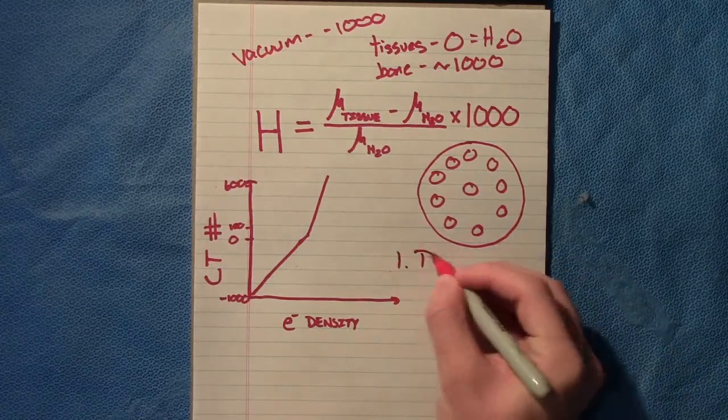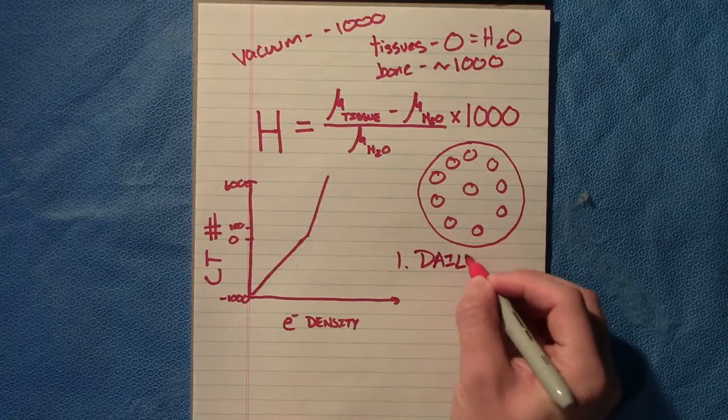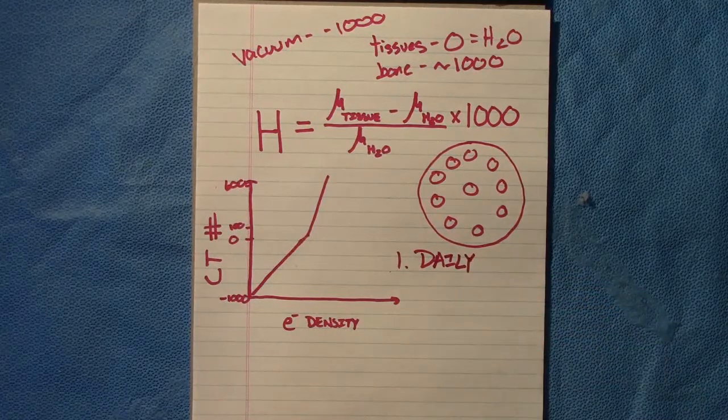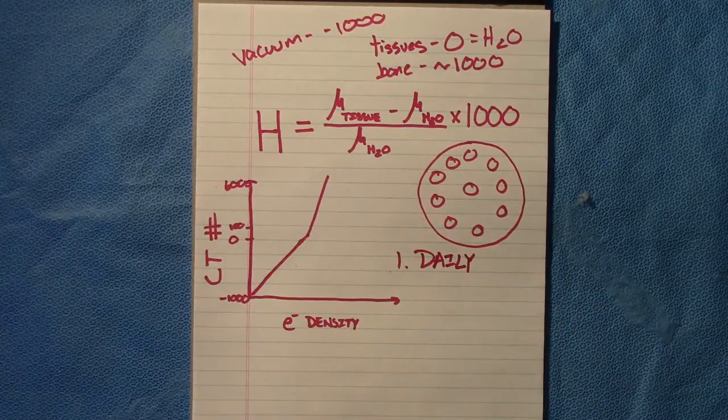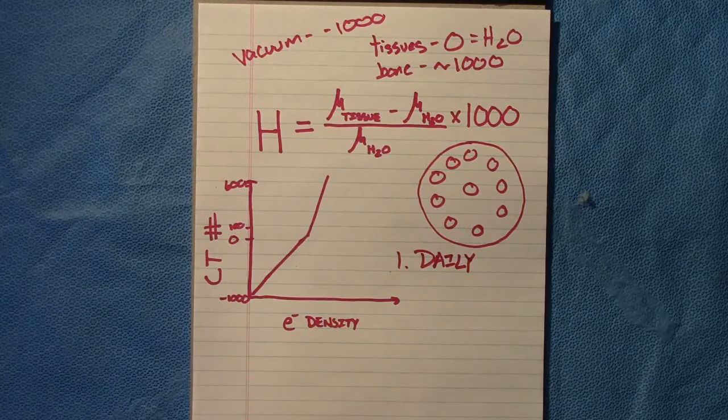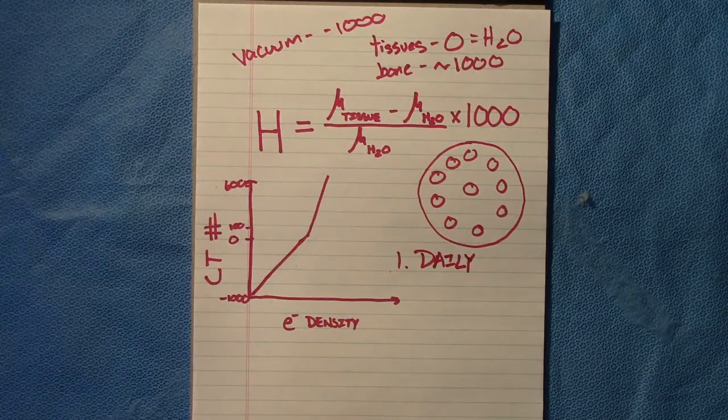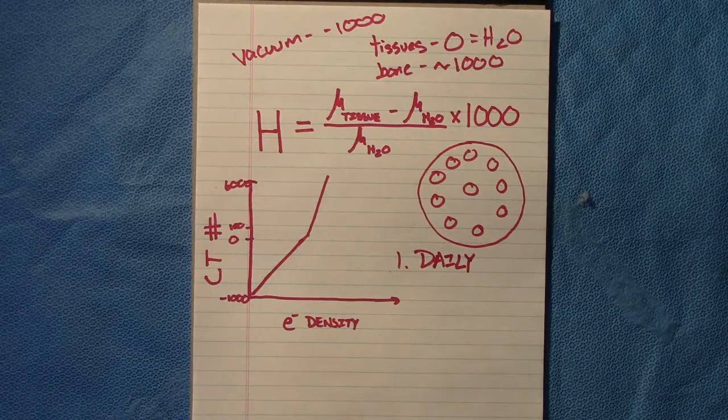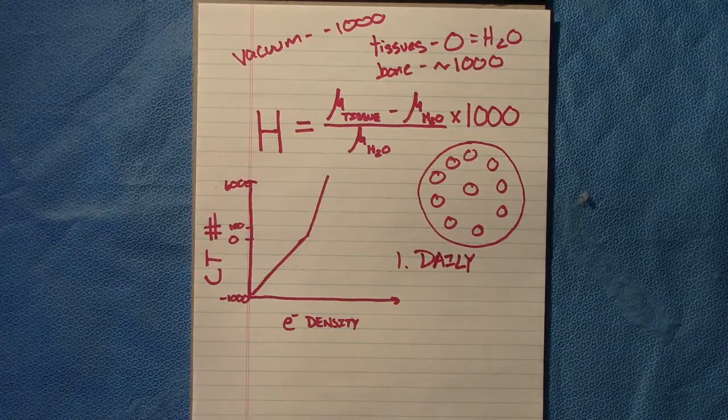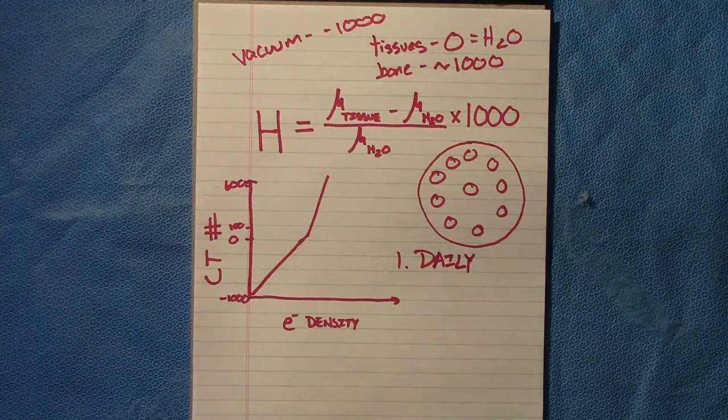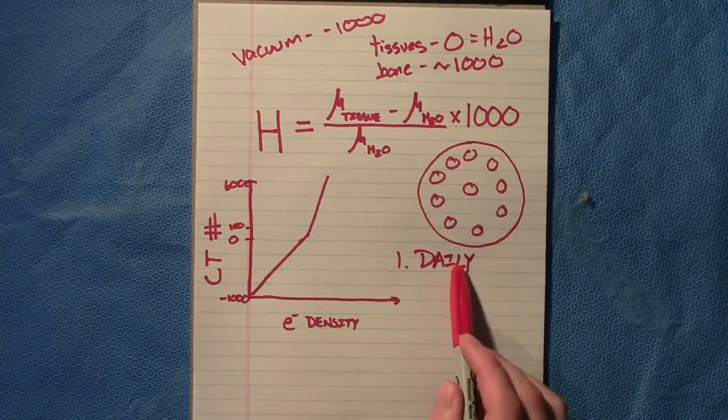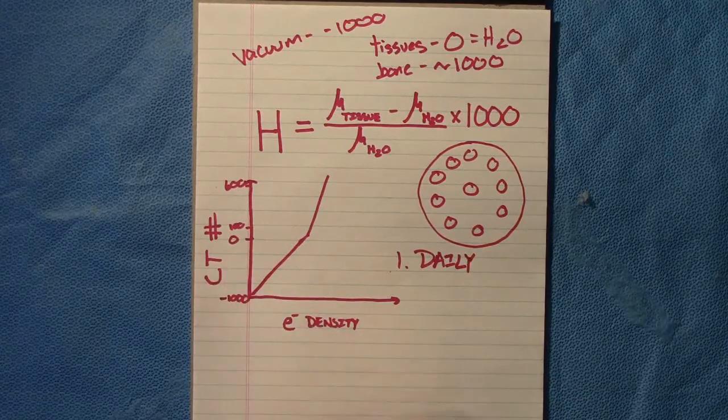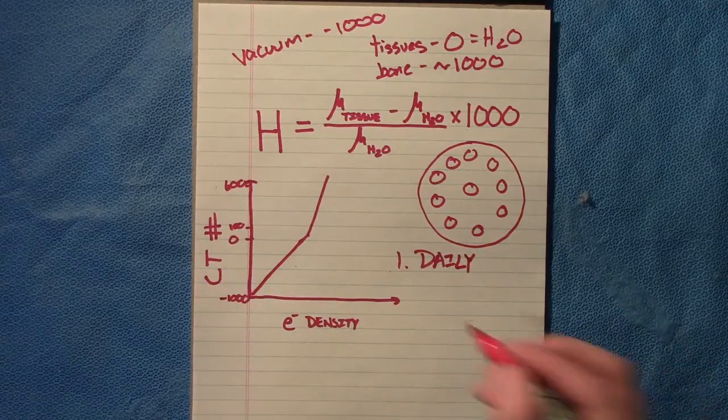The first test that we have daily: we scan a phantom and it has some plugs in it that we know what the CT number should be because we did that when we commissioned the CT. We test it—there's also other things such as lasers and positioning that we also test daily too, but for the realm of this discussion, the big thing is daily we do test CT number of water and the most common materials.